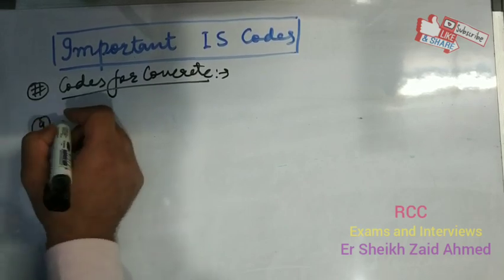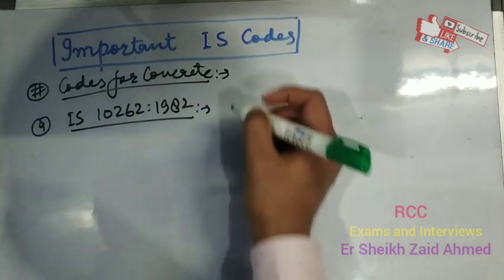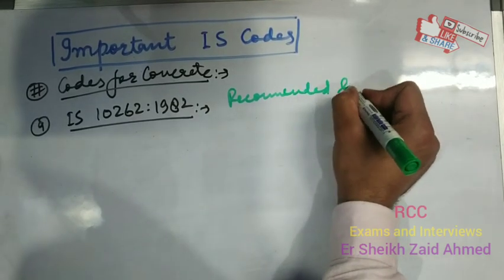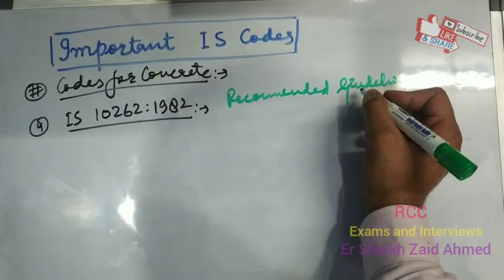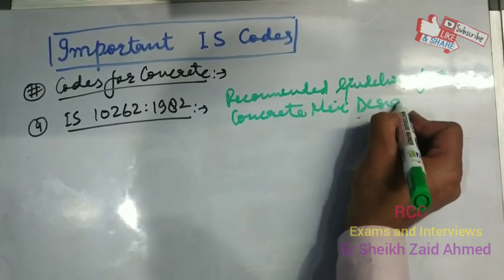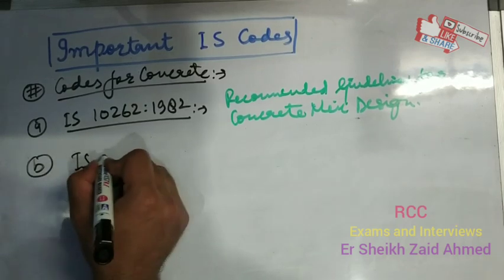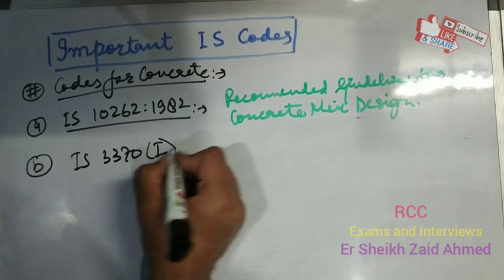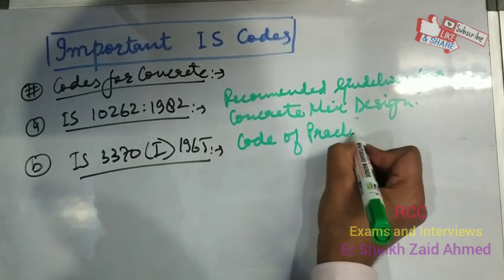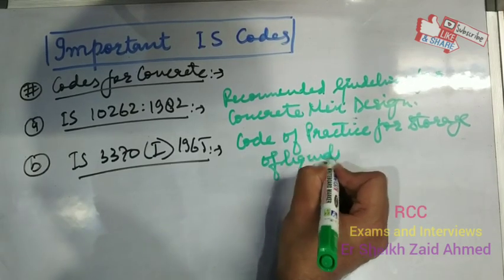Moving on to codes for concrete. The first and most important is IS-10262-1982. This IS code is regarding recommended guidelines for concrete mix design. Whenever we perform a concrete mix design, we refer to this code. The second is IS-3370 Part 1, 1965. This code of practice is for storage of liquids — you can say water tanks.